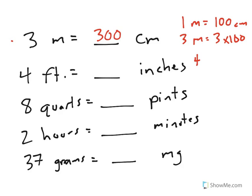4 feet to inches. I know that in 1 foot, there are... Let's go ahead and change this to say 1 foot. In 1 foot, there are 12 inches. So in 4 feet, that would be equal to 4 times 12 or 48 inches.